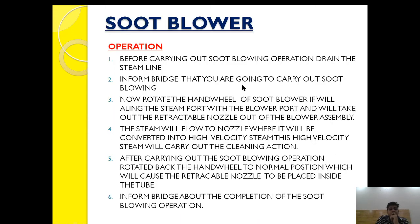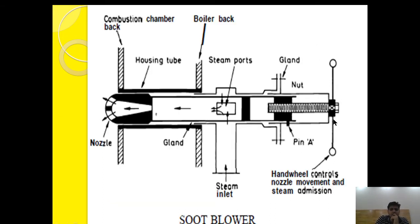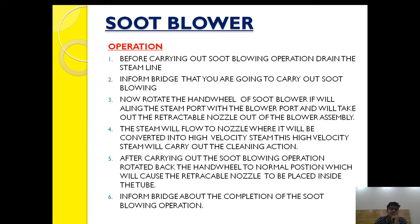Before carrying out the soot blowing operation — before you rotate the hand wheel to align the steam port with the steam inlet port — we should keep some things in mind. First: drain the steam line. This is very important because soot blowing is carried out only twice or thrice a day. As it is not a regular operation, the steam in the line may condense and change into water, which if steam is suddenly opened will cause hammering. To prevent that, we drain the steam line first.